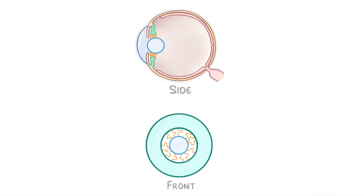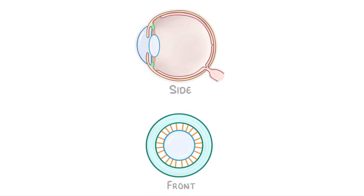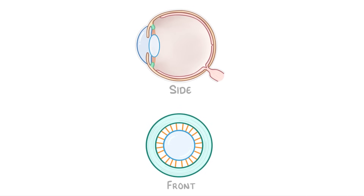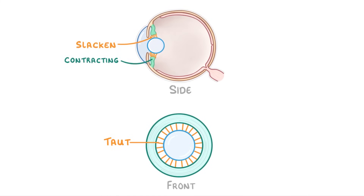So if we switch between the two, you can see the difference in the ciliary muscle and the attached suspensory ligaments, and how they're altering the shape of the lens. The key thing to remember is that when the ciliary muscle contracts, it's moving inwards towards the lens, not outwards. Also remember that because the suspensory ligaments aren't muscles, they can't contract or relax — they can only be pulled taut or slacken. Whereas because the ciliary muscle is a muscle, we talk about it contracting and relaxing.